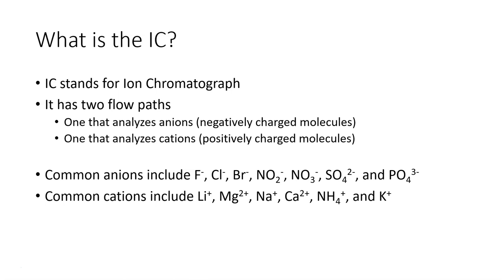The most common anions that are analyzed with the IC include fluoride, chloride, bromide, nitrite, nitrate, sulfate, and phosphate. The most common cations that are analyzed with IC are lithium, magnesium, sodium, calcium, ammonium, and potassium.